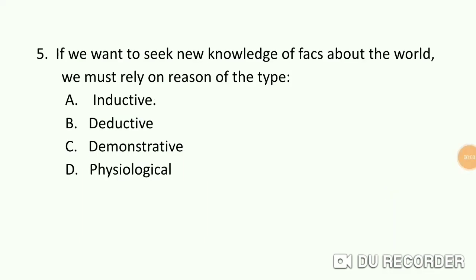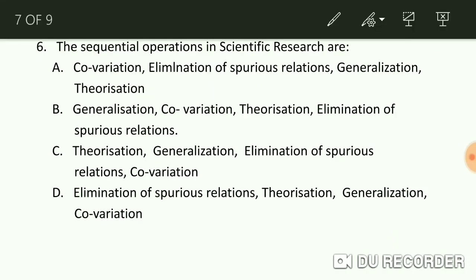Question number five: if we want to seek new knowledge of facts about the world, we must rely on reason of the type of A) inductive, B) deductive, C) demonstrative, or D) physiological. The answer is A, inductive. In the deductive method, knowledge already present is systematized, whereas to understand new facts and build theory from them, the method used is the inductive method.